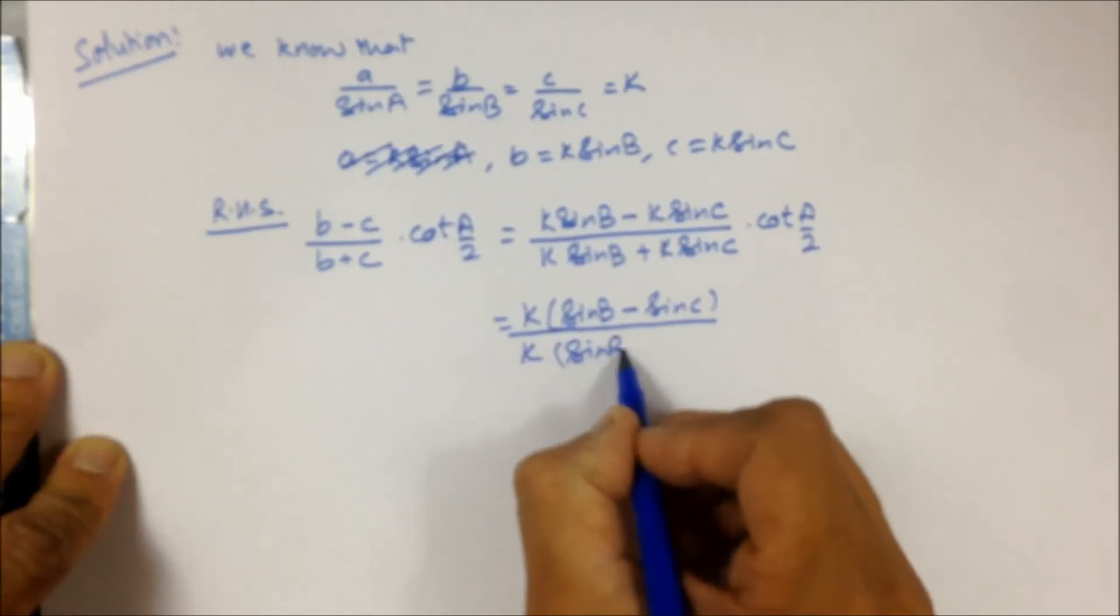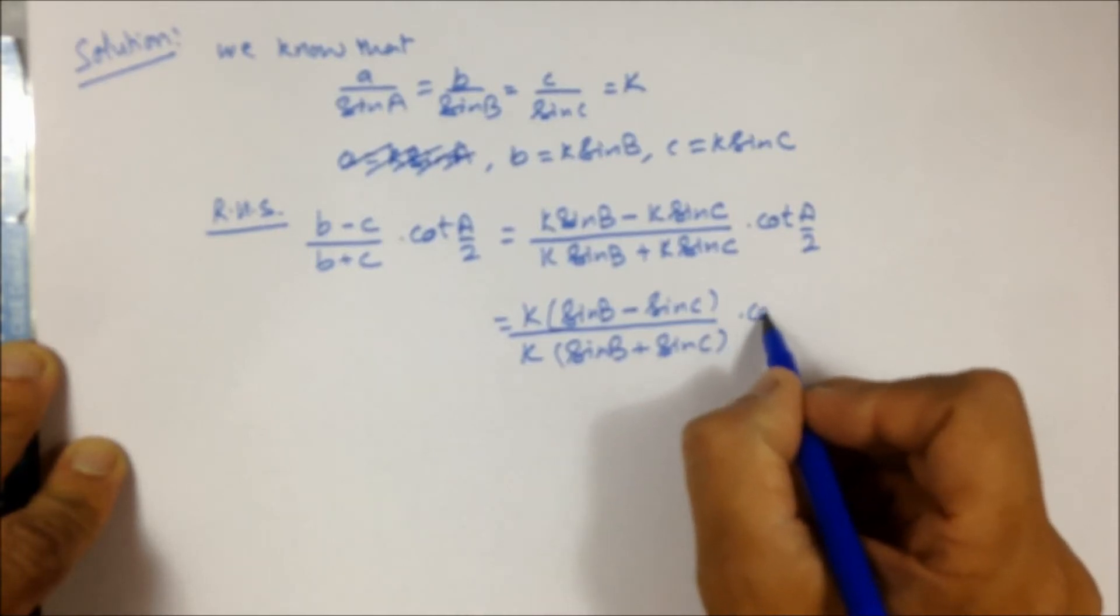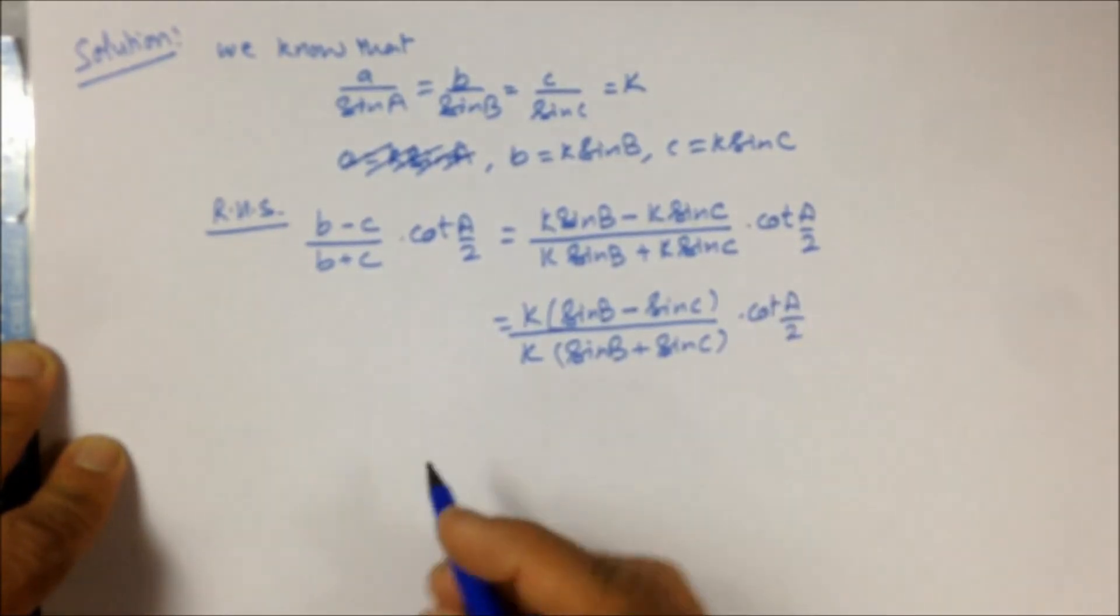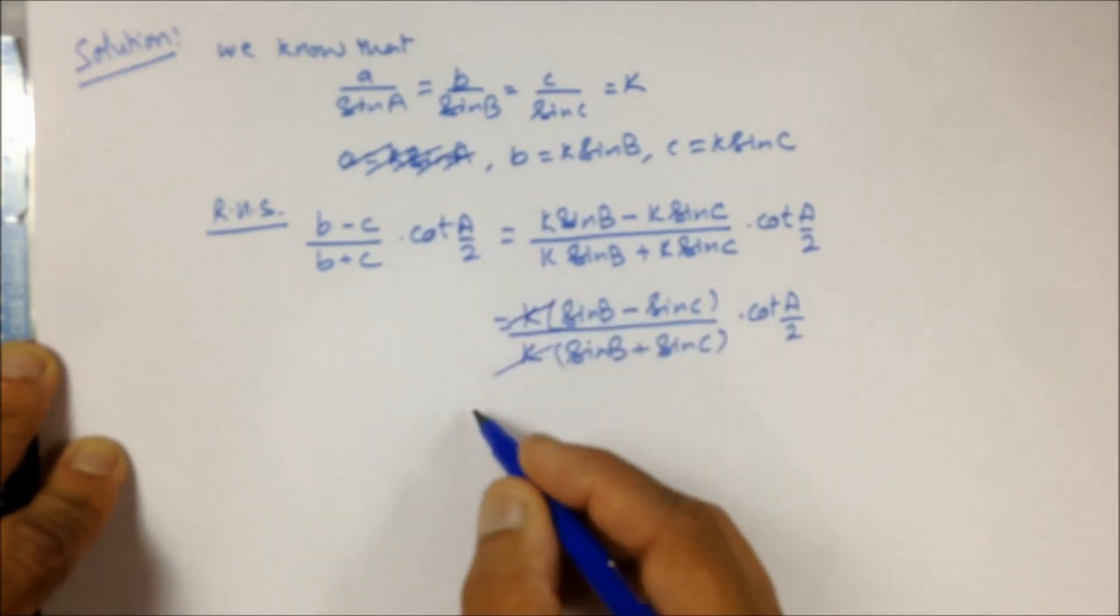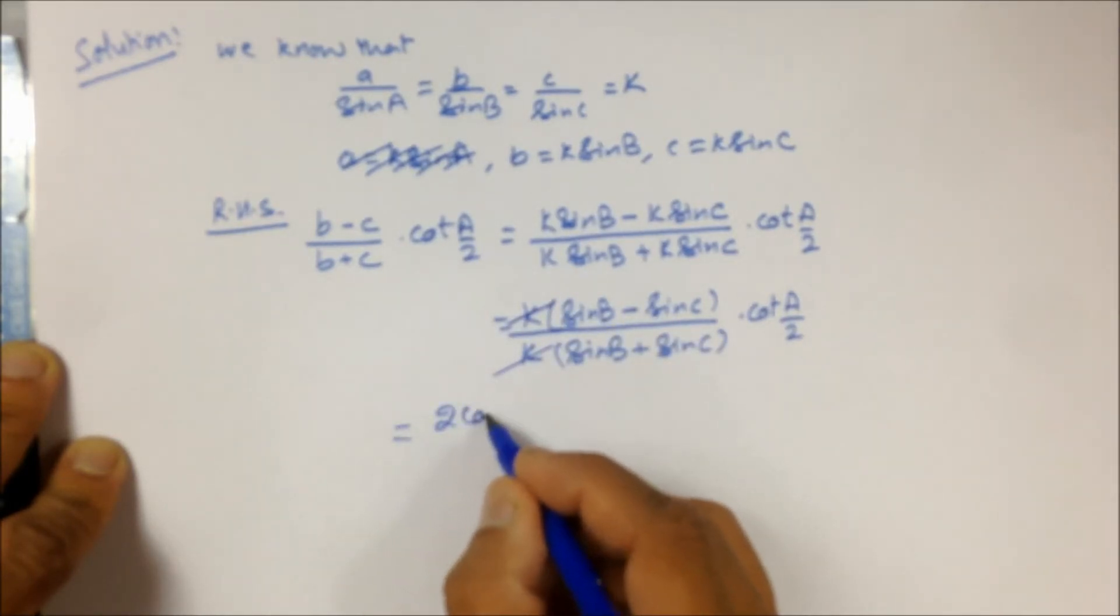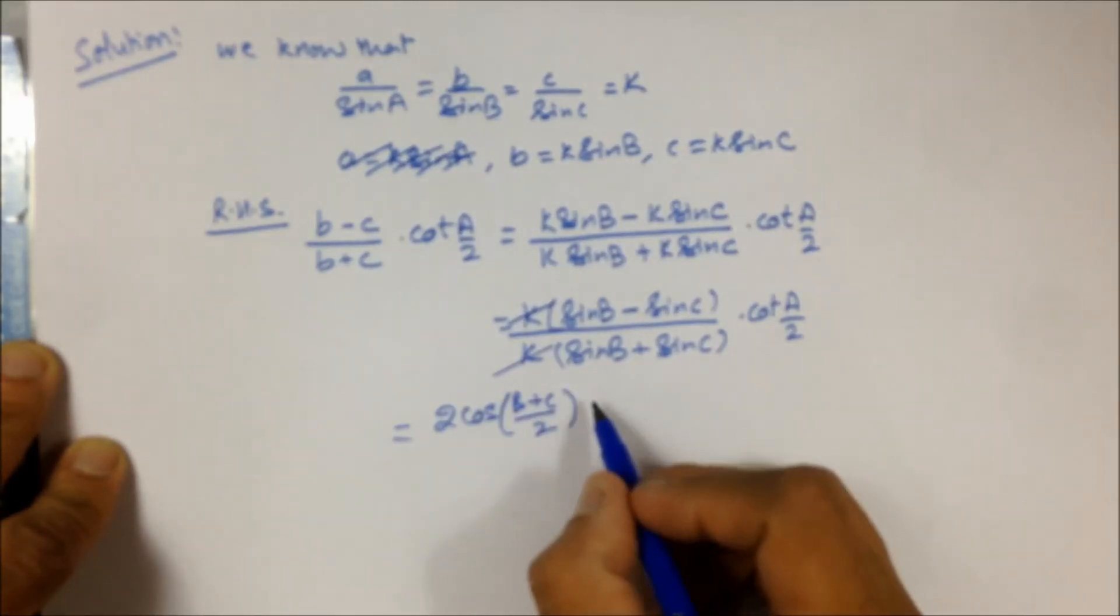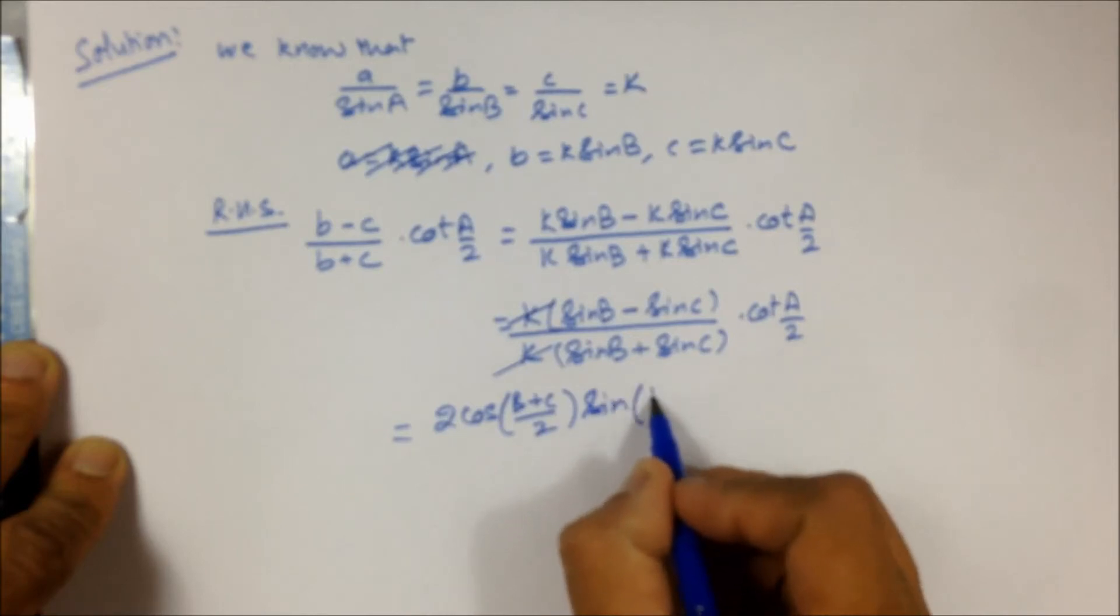And then we'll apply sum-to-product: sin(C) - sin(D), or sin(α) - sin(β). I'm canceling k common. Now using sum-to-product: 2·cos((B+C)/2)·sin((B-C)/2).